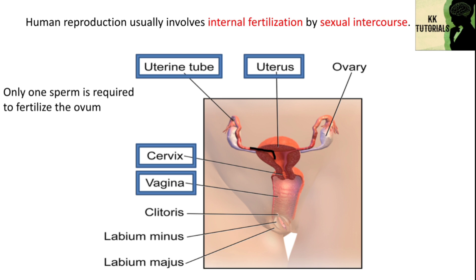When the fetus has developed to a certain point, pregnancy is concluded with childbirth, involving labor. During labor, the muscles of the uterus contract and the cervix dilates over the course of hours, and the baby passes out of the vagina.